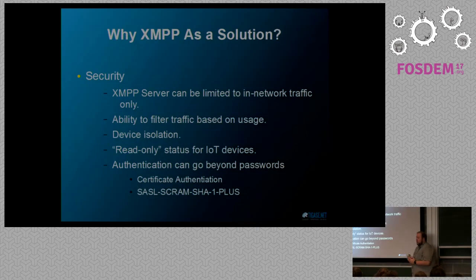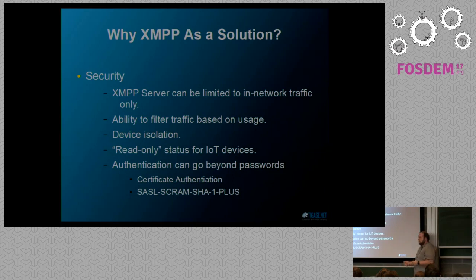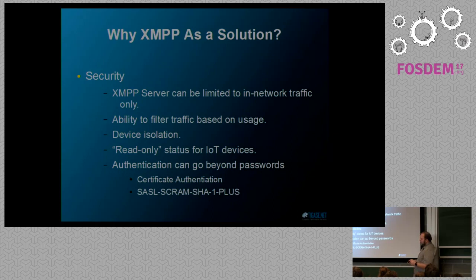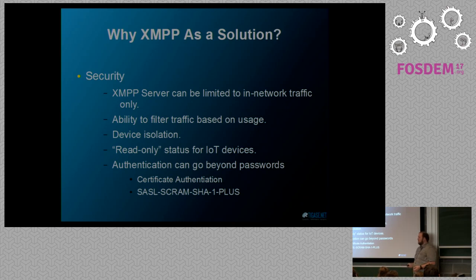Why would we want to use XMPP as a solution? One big reason is security. The XMPP server can limit traffic to in-network only. For example, if you want to set up a home security system and only have people inside the house control it, that's easily done. We can filter traffic using XMPP server logic, and we have device isolation that prevents devices from being touched by anybody outside the network. Authentication can also be more than just a simple password using standard XMPP server features.